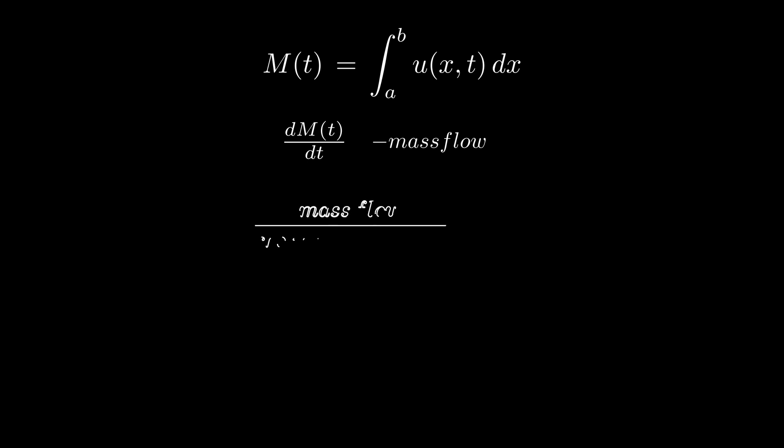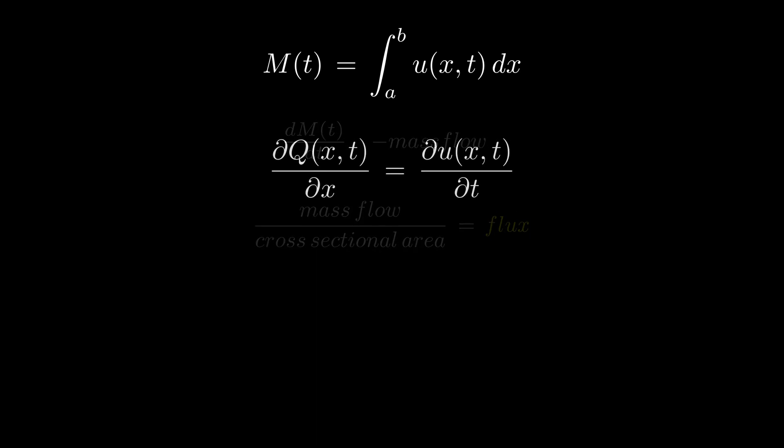When we consider the mass flow over the cross-sectional area of the tube, we call it a flux. Flux q, therefore, satisfies the following equation. The reason for introducing these quantities becomes more apparent when we turn back to our integral.